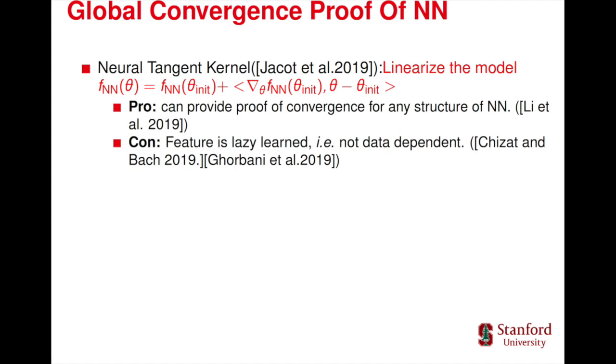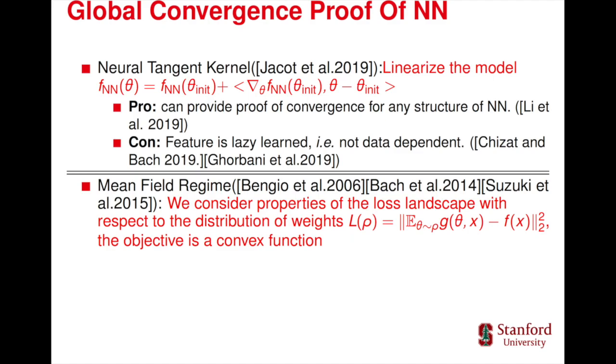The other regime is called Mean Field Regime. In this regime, we consider properties of the loss landscape with respect to the distribution of weights, with the observation that although the objective function is not convex with respect to each parameter, it's convex with respect to the distribution of weight.